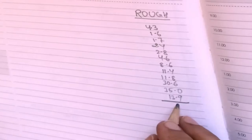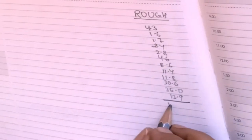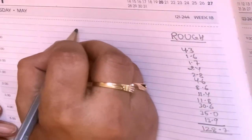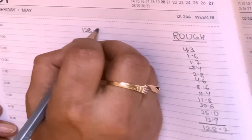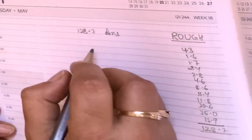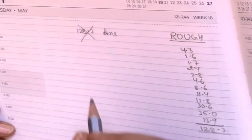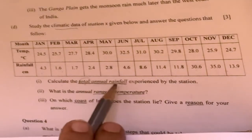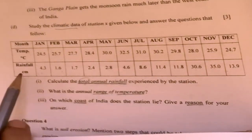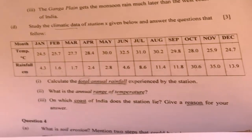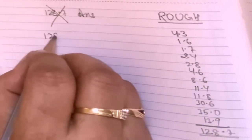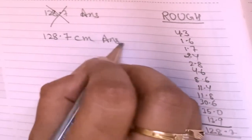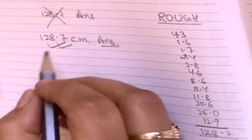After adding, you are getting 128.7. If you write '128.7' as the answer, this will be wrong. Why? Because they are asking total rainfall, and rainfall is always in centimeter. So you have to write '128.7 centimeter' as your answer — that will be correct.